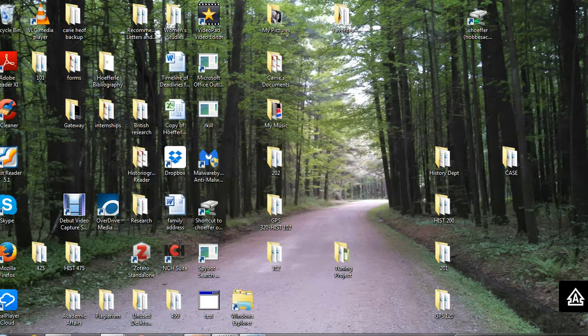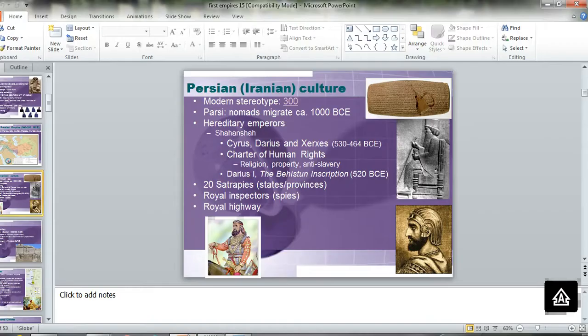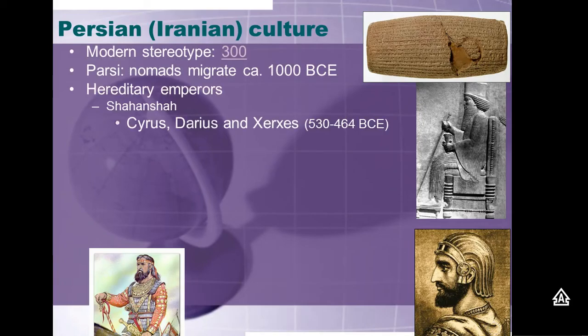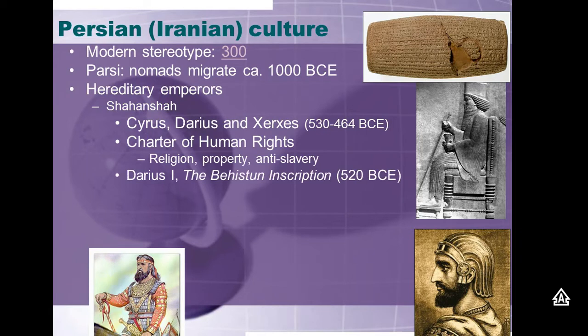Let's take a look at where we left off on Monday. Remember I had the PowerPoint up and you were giving me great questions and feedback on the question about the first empires. We left off talking about the charter of human rights that Cyrus the Great left us with — one of the first charters of human rights in all of world history, coming from the Persians. So unlike the 300 movie, the Persians were quite enlightened in terms of protecting the human rights of their conquered peoples.